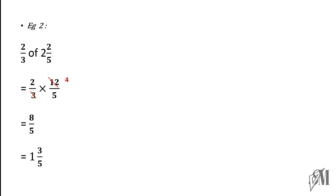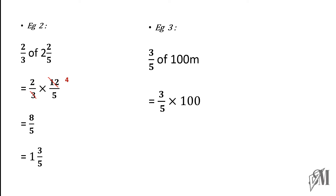Similarly, you can get expressions with 'of' like this: three over five of one hundred meters. We do the same thing — replace 'of' with multiplication. Five and one hundred can be cancelled; there are twenty fives in one hundred. So three times twenty is sixty meters, and that is the final answer. This is how you simplify fractions with the expression 'of'.